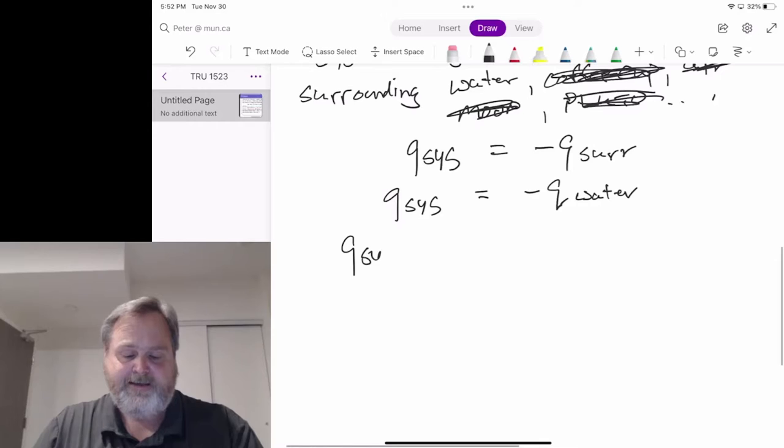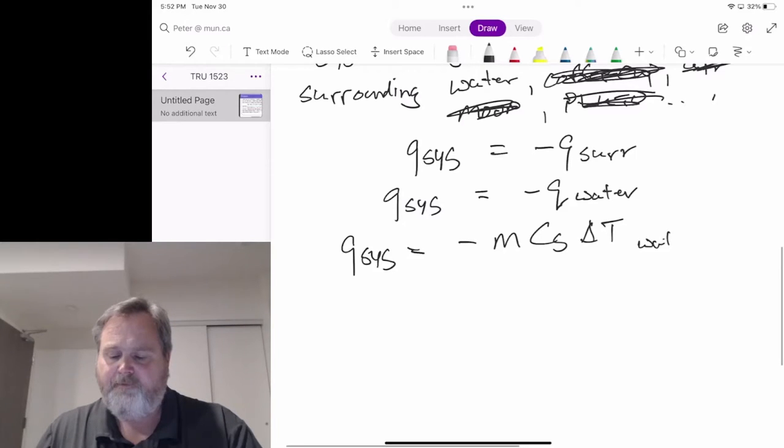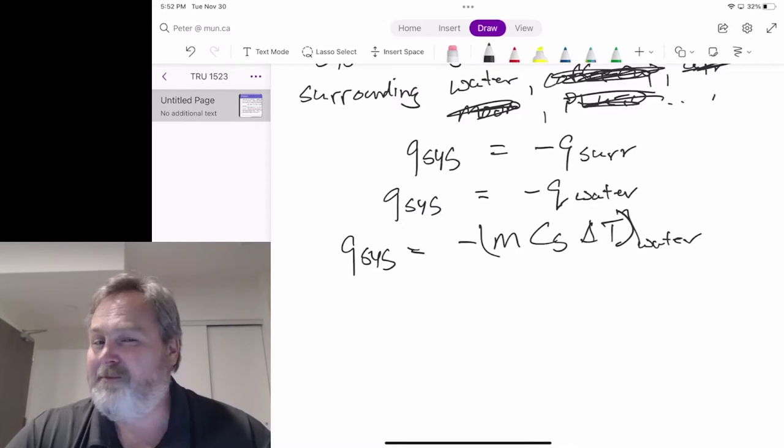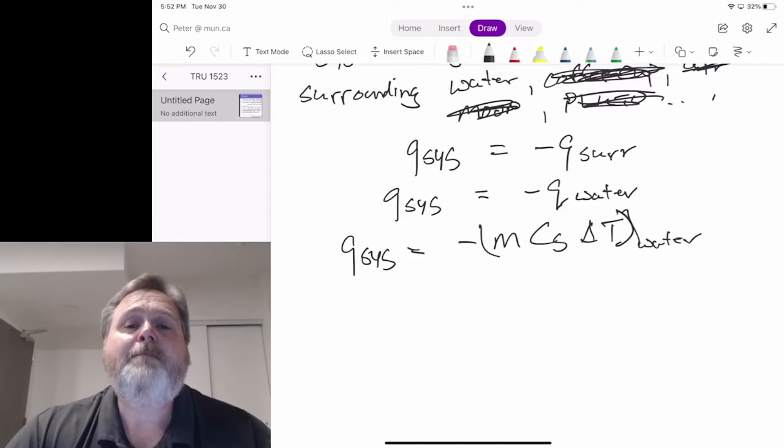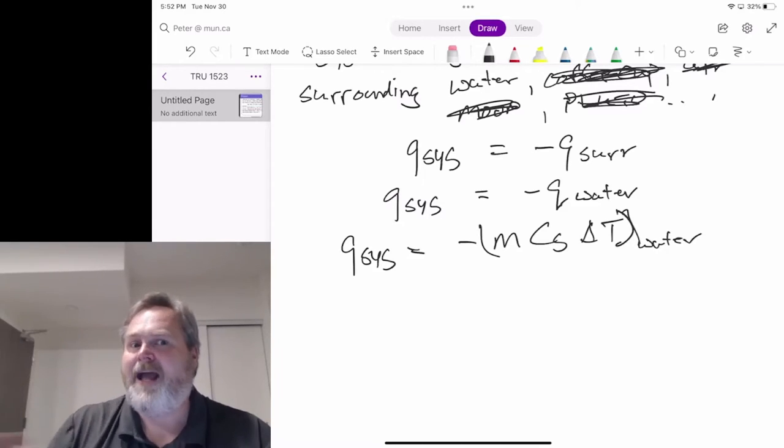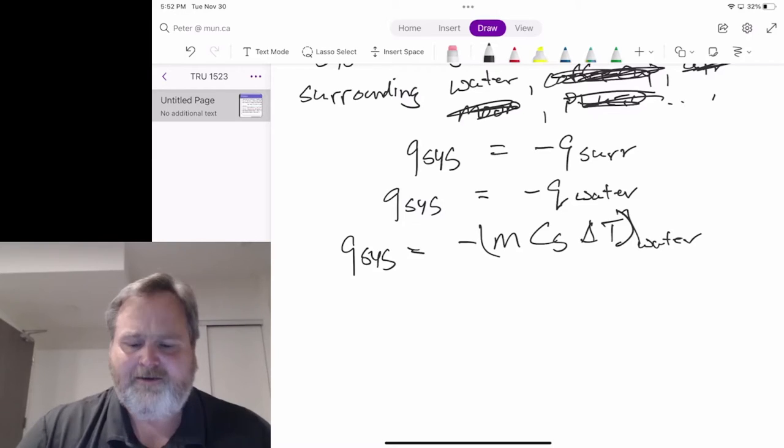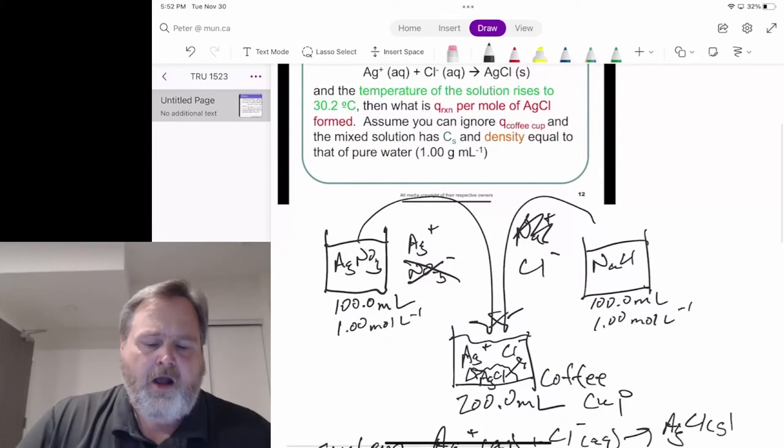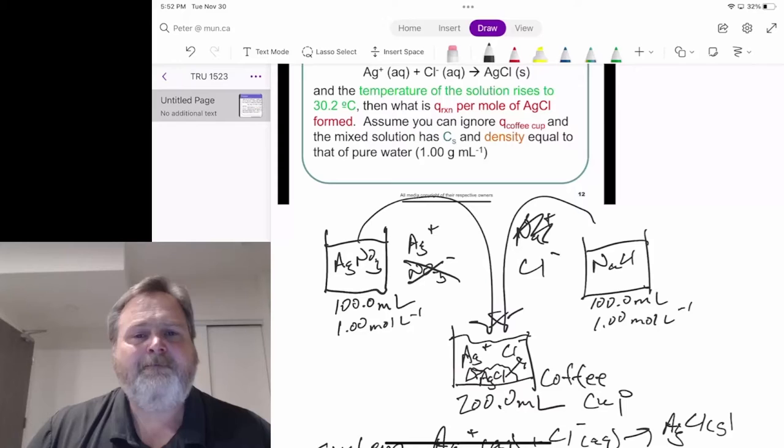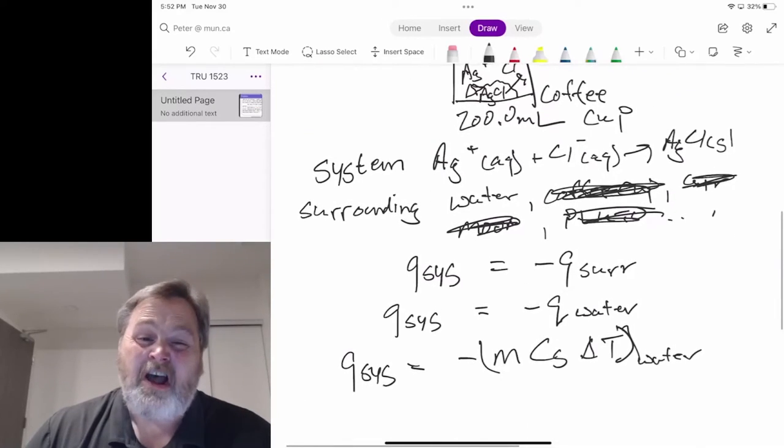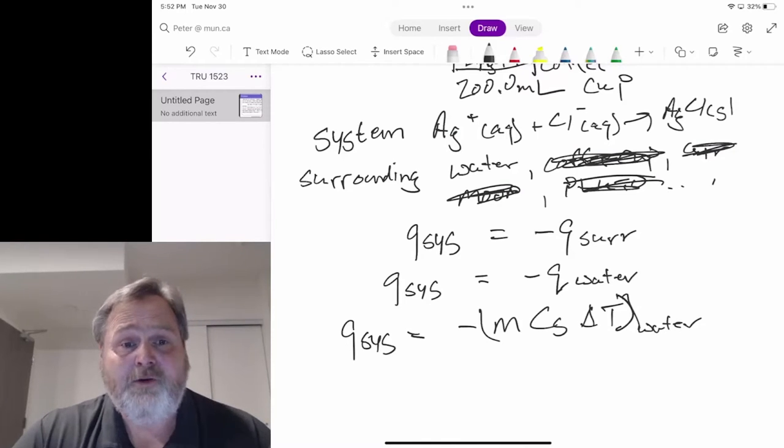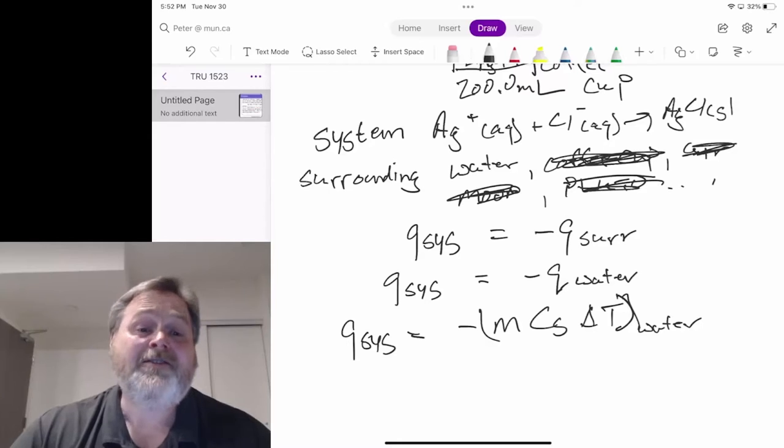That means Q_sys equals negative m·C_s·ΔT, all for water, because that's what we're measuring the temperature change for. In calorimetry experiments, we don't measure things directly for the reaction. We measure what's happening to the surroundings and tie it back through the first law. We don't know the mass in this case, but that's another assumption we've been given. Assume the mixed solution has a heat capacity and density equal to that of pure water. Is that really true? Not really, but as long as these solutions are reasonably dilute, it's going to be close to true.